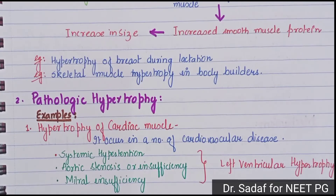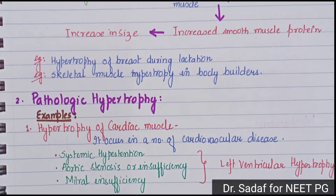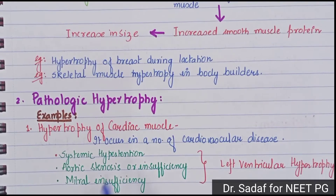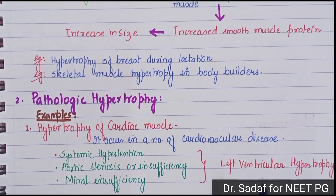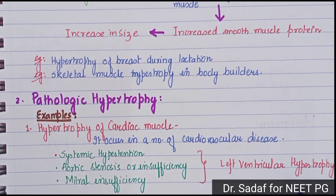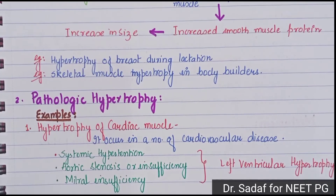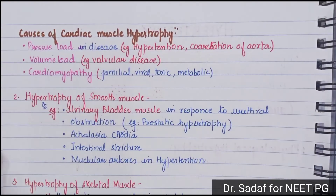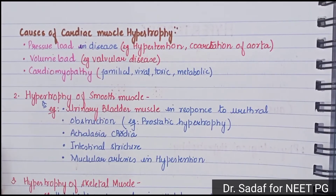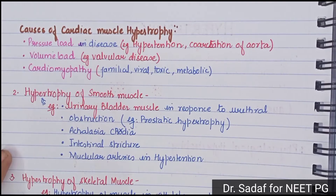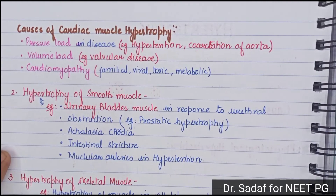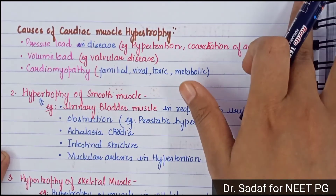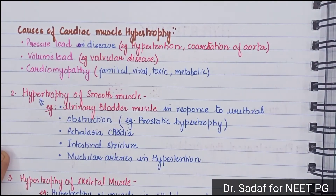Cardiac muscle hypertrophy occurs in conditions like systemic hypertension, aortic stenosis, and mitral insufficiency. In these diseases, the left ventricle undergoes hypertrophy, which is called hypertrophy of the cardiac muscle.